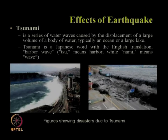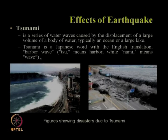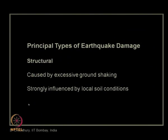Let us now see what are the principal types of earthquake damage. Structural damage can be caused by excessive ground shaking and can be strongly influenced by local soil conditions. Historical examples include the Mexico City earthquake of 1985.